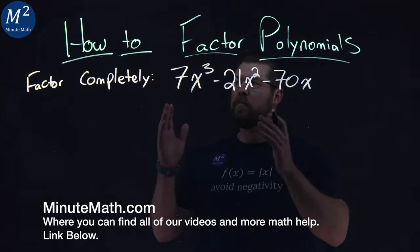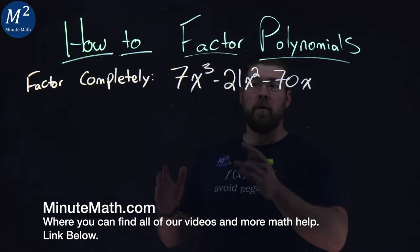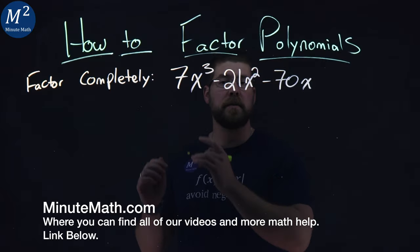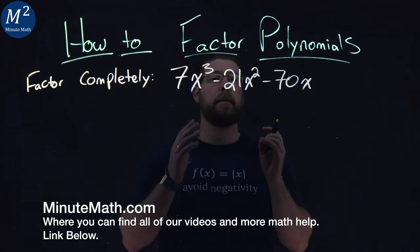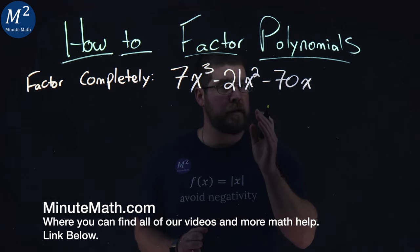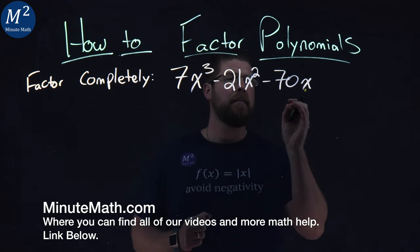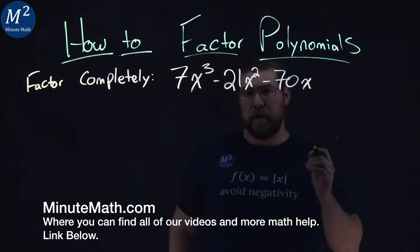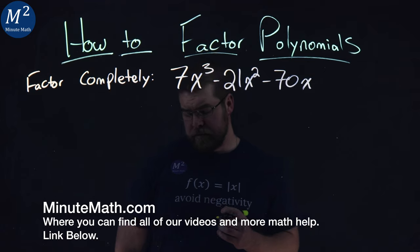We're given this problem here. We want to factor completely: 7x cubed minus 21x squared minus 70x.